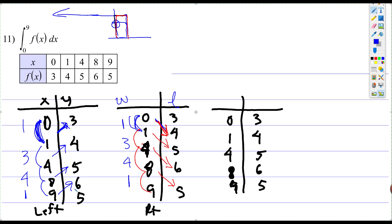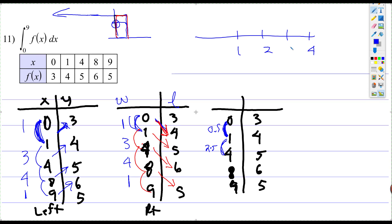For the midpoint, the midpoint we're talking about is here. So that would be 0.5, or one half. Between 1 and 4 — if we look at a number line, here's 2, here's 3 — 2.5 would be the midpoint. Between 4 and 8, 6 would be the midpoint. Between 8 and 9 would be 8.5.